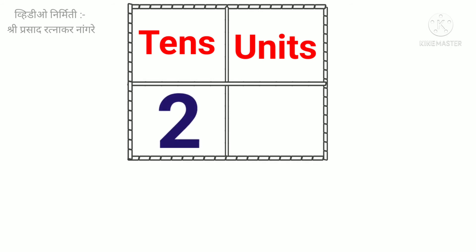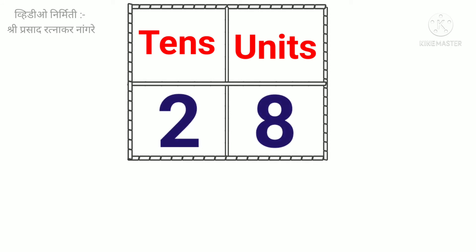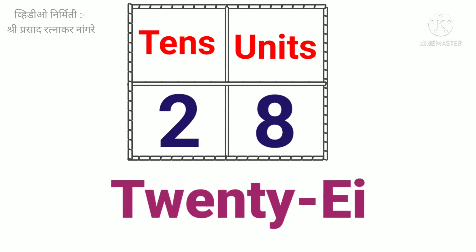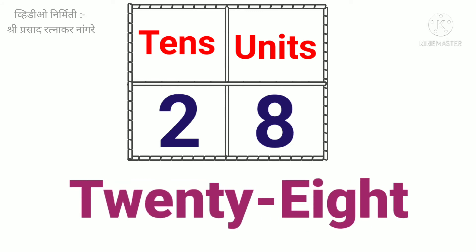Two tens. Eight units. Twenty-eight. T-W-E-N-T-Y-E-I-G-H-T. Twenty-eight.